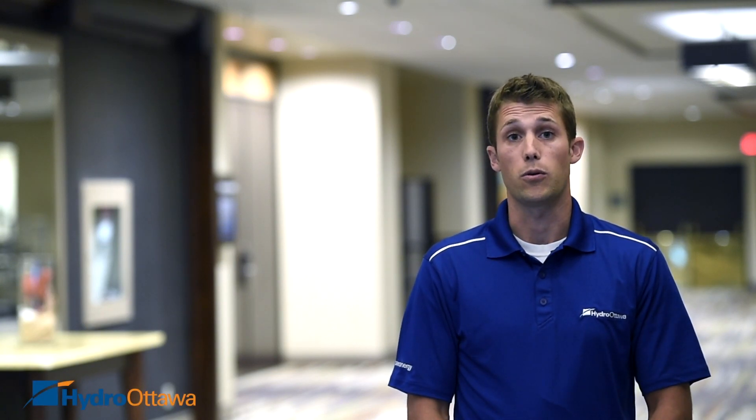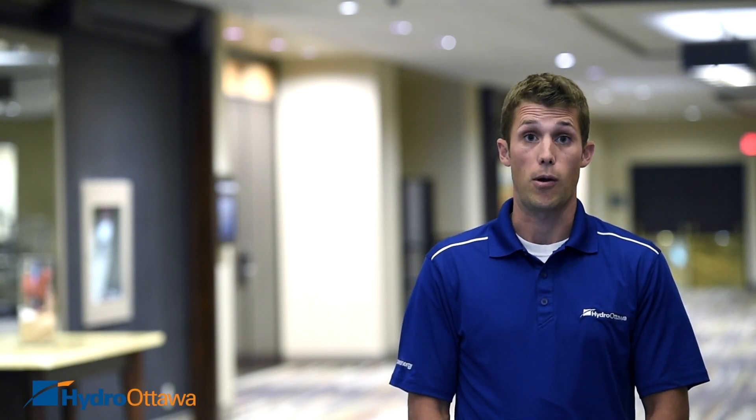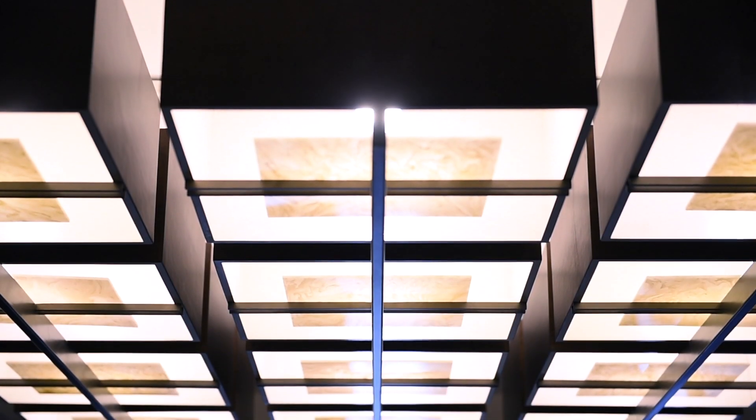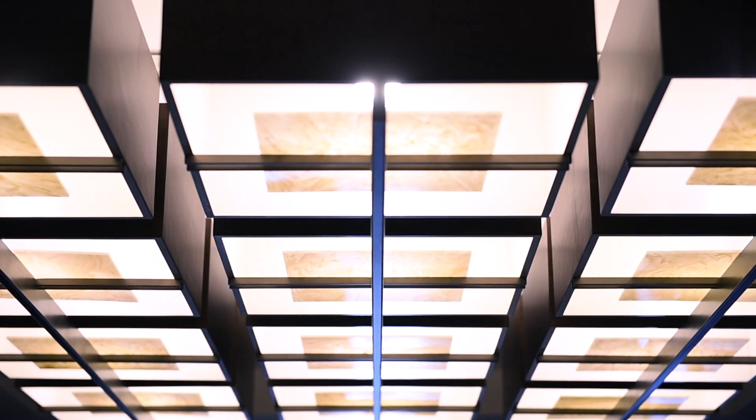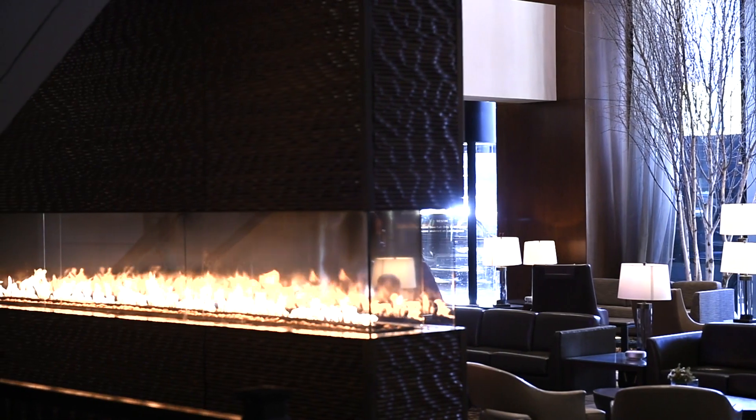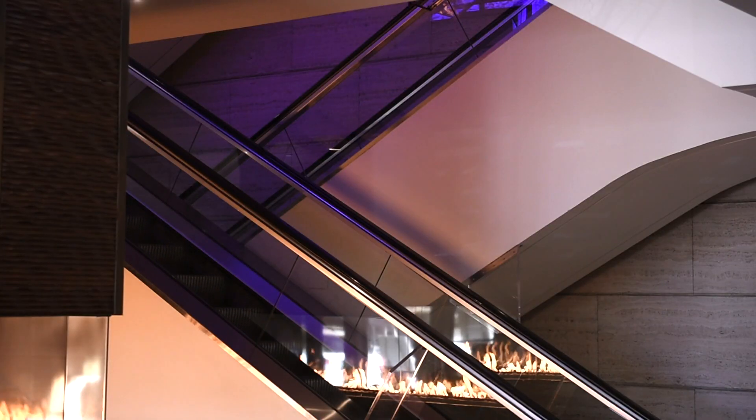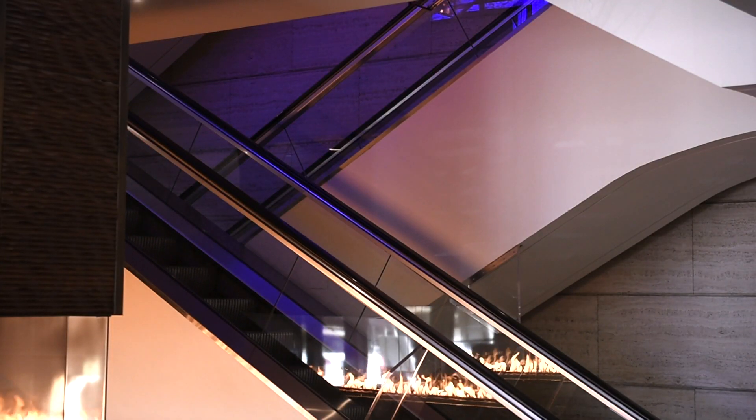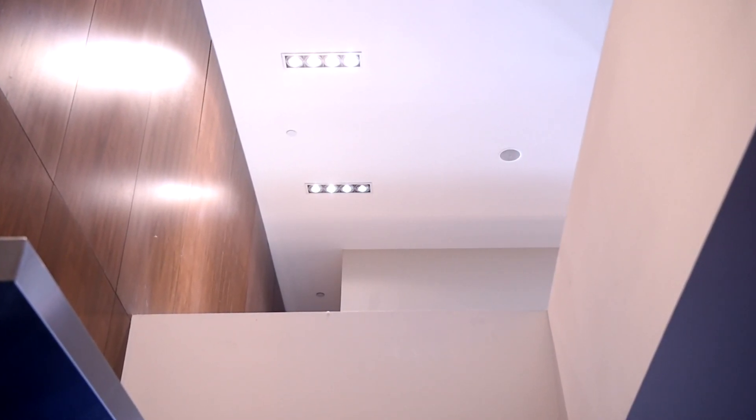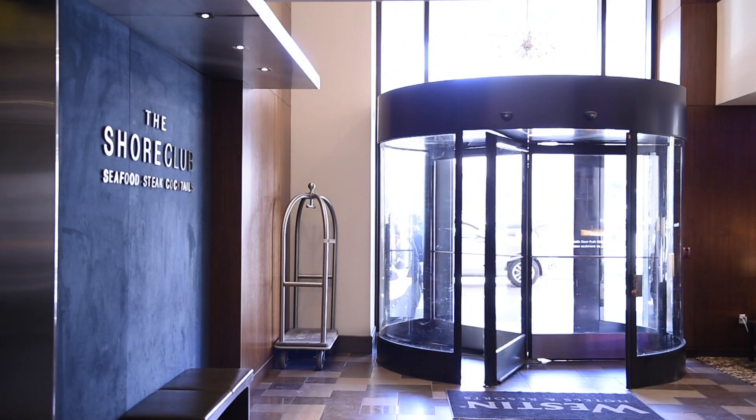Weston Ottawa is taking a three-phase approach to implementing LED lighting throughout the building. The first phase was all of our public area lighting which was on 24 hours a day. It had the most significant incentive program offered by Hydro Ottawa where we changed out 4,000 bulbs in the lobbies, pre-function areas, all of our guest corridor hallways, and our ballrooms.